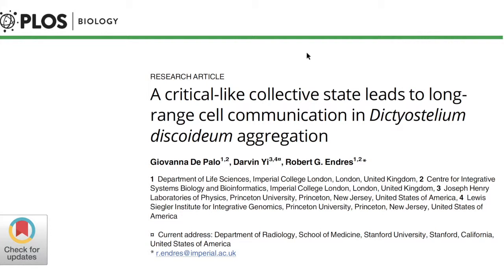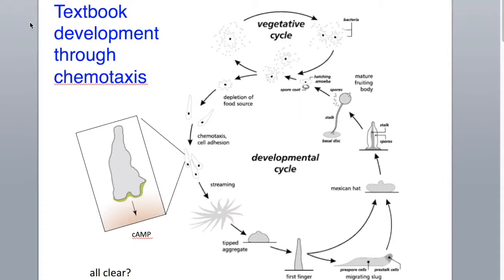There is currently a lot of interest in quantitative biology to understand the collective behavior of biological systems, ranging from cells to bird flocks to fish schools and even human crowds. A typical example of collective behavior is the starvation-induced aggregation of Dictyostelium amoeba.